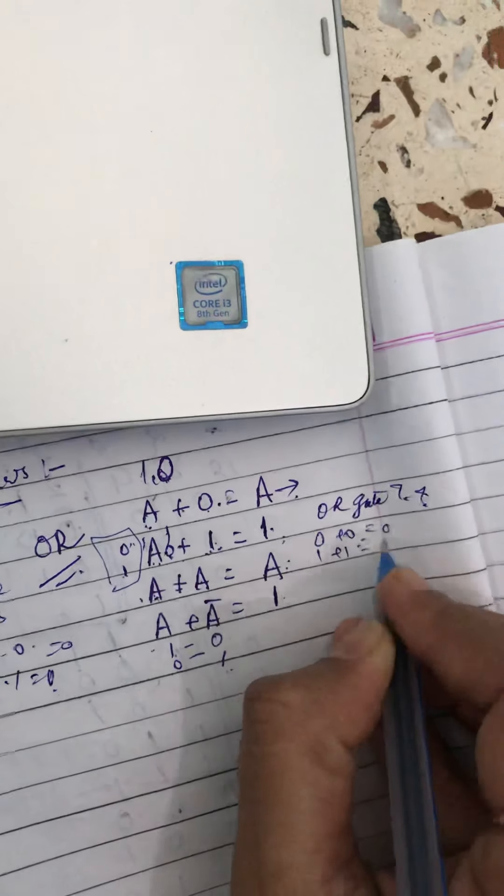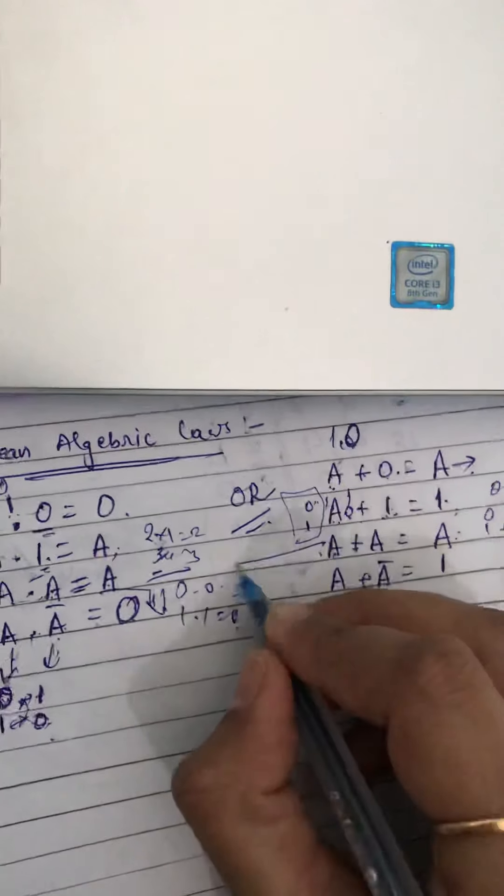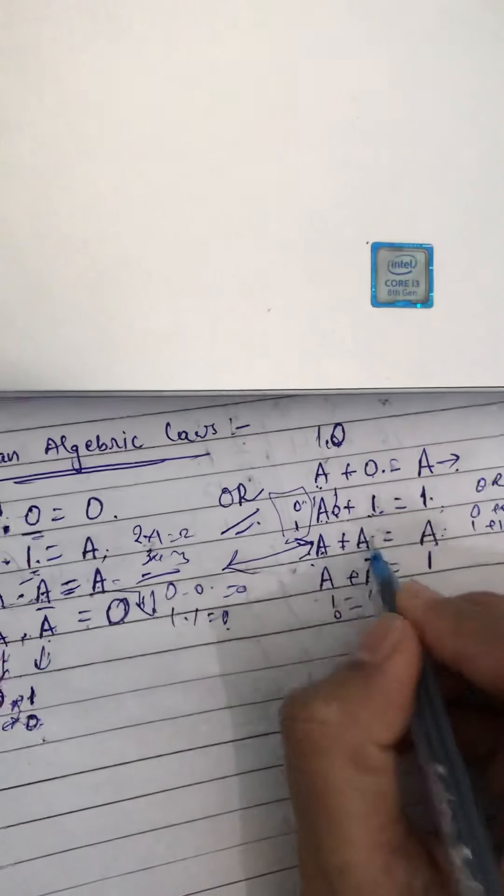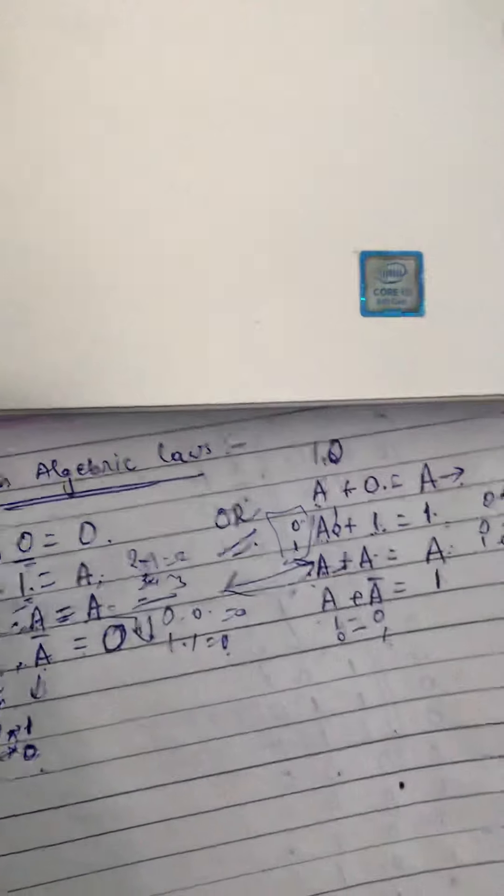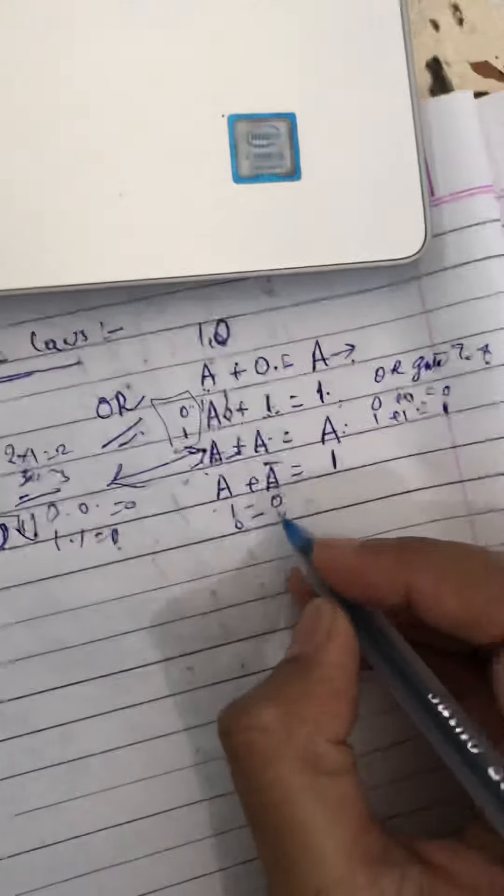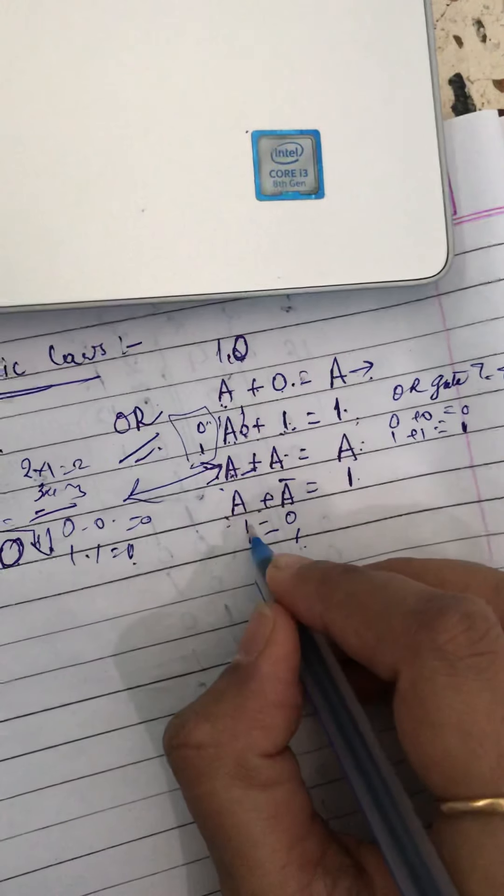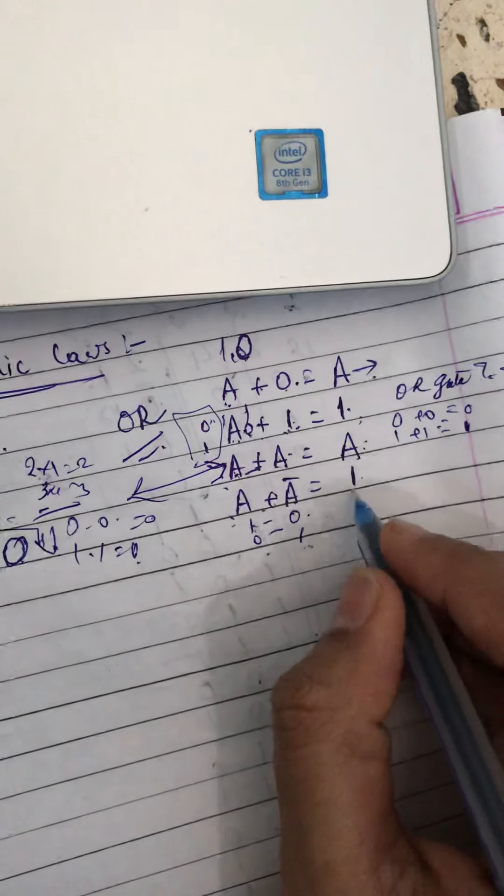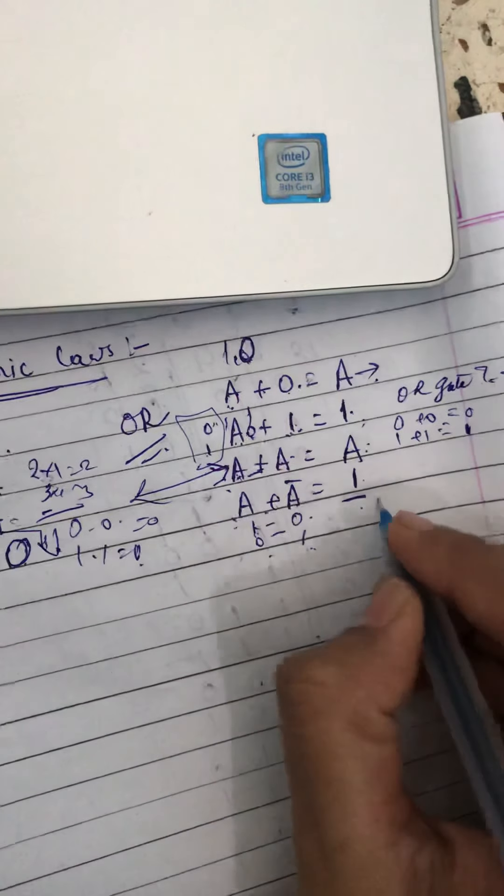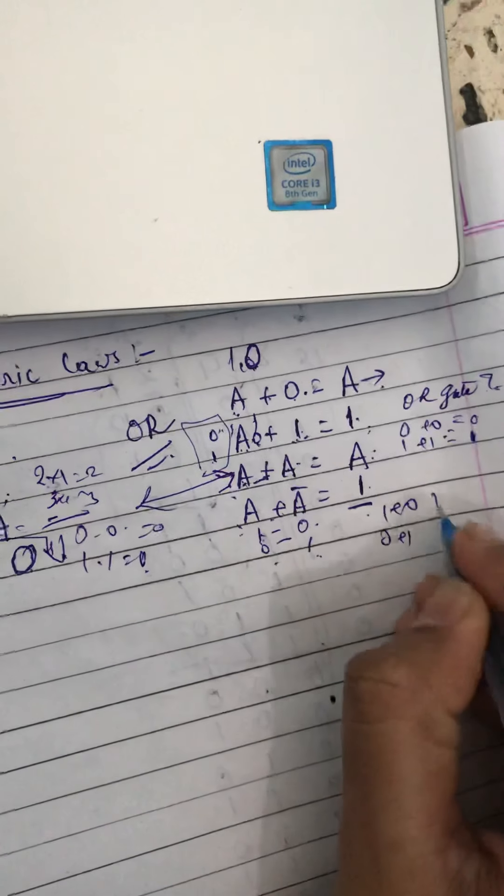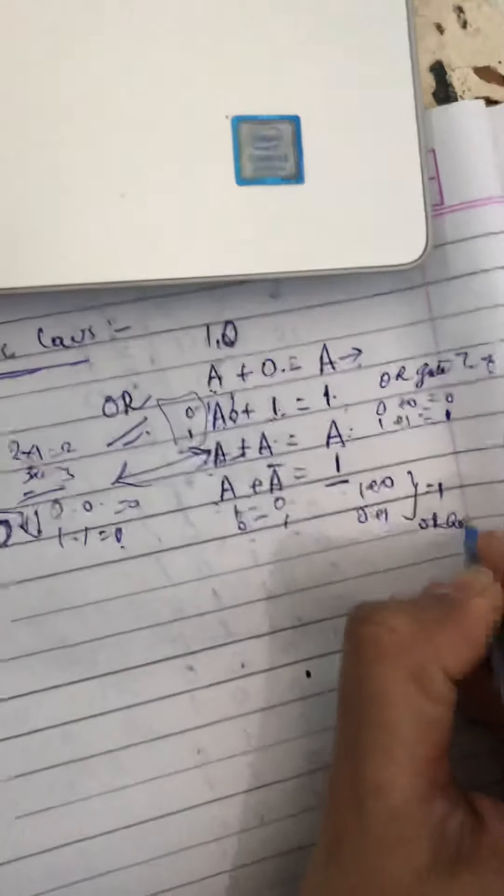Both will be zero and one respectively. So these two laws are seen in AND and OR, but the output sign will change. The last one is A plus A bar. A is either one or zero. You will get one because addition of one plus zero or zero plus one gives you one in an OR gate truth table.